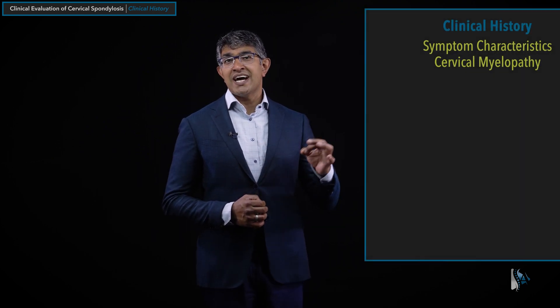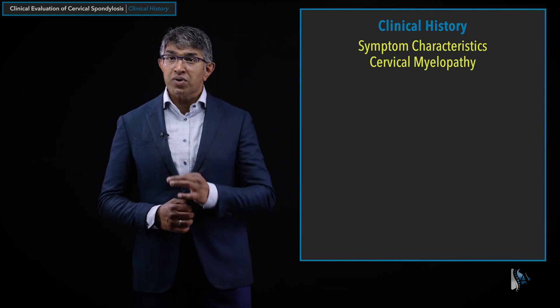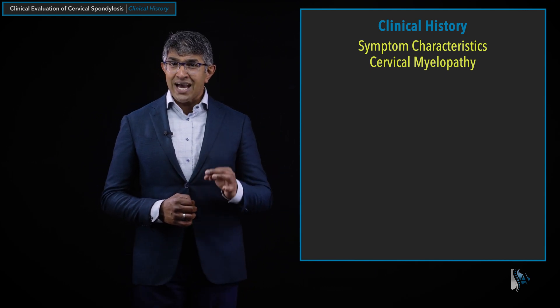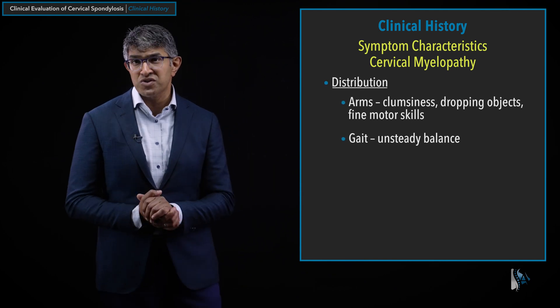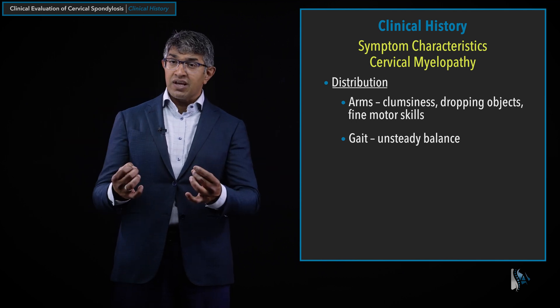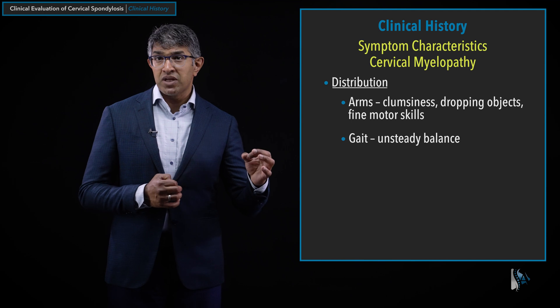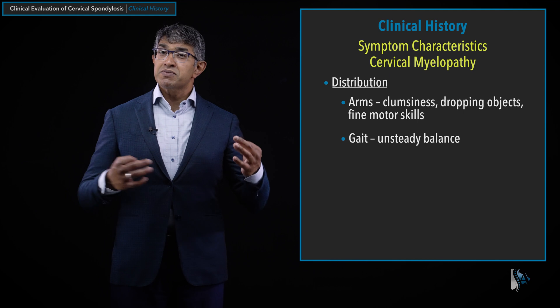The first thing I like to ask about is symptoms of cervical myelopathy — problems related to spinal cord dysfunction. The symptoms can involve the arms and the legs. In the arms, I ask about difficulty with dexterity: have they been dropping things more, having difficulty buttoning their shirt, zippers, jewelry, things like that. Myelopathy of the upper extremity, which is frequently involved with spinal cord compression in the neck, will typically cause symptoms like clumsiness and dropping things.